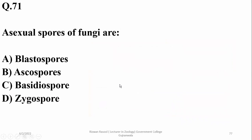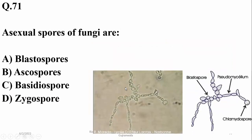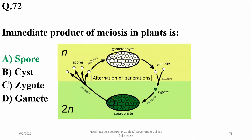Number 71. Aseptate spores of fungi are sometimes blastospores, conidia, or generally spores. So blastospore is the right option. Others in the list are sexual spores. Number 72. The immediate product of meiosis in plants is a spore, because whenever plants reproduce by meiosis, they form spores.